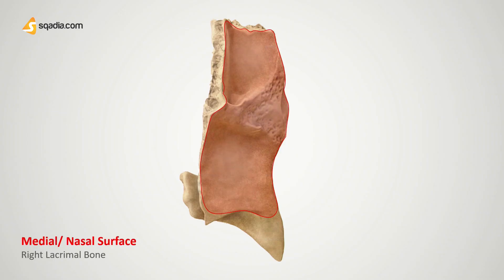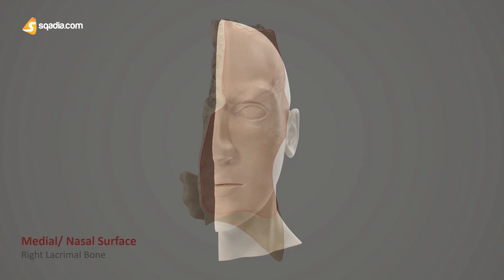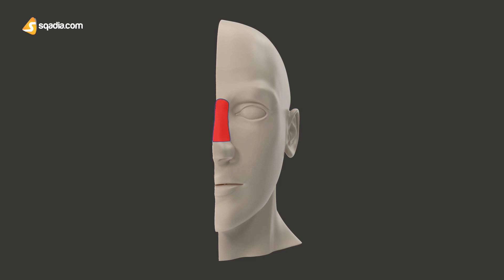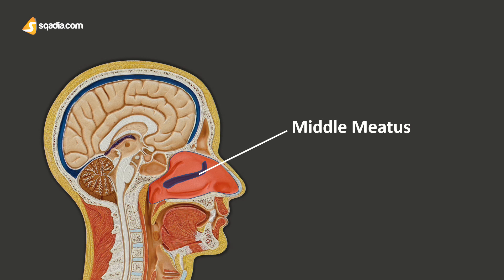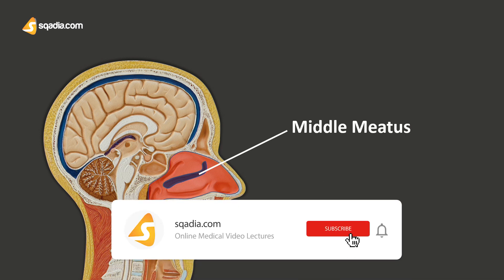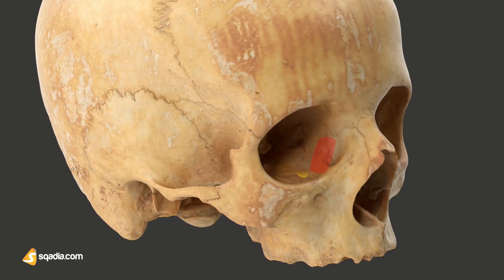Then we have the medial surface, also called the nasal surface because it faces the nasal cavity. On this surface we can notice a longitudinal furrow which corresponds to the posterior lacrimal crest that was present on the orbital surface. Towards the anterior part of this furrow there's a portion of the bone that forms part of the middle nasal meatus. The middle meatus is an air-containing space that is part of the nasal cavity, whereas the part located posteriorly to this furrow articulates with the ethmoid bone, enclosing some ethmoidal air cells or ethmoidal sinuses.